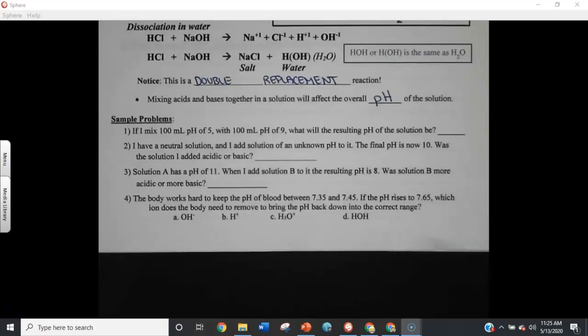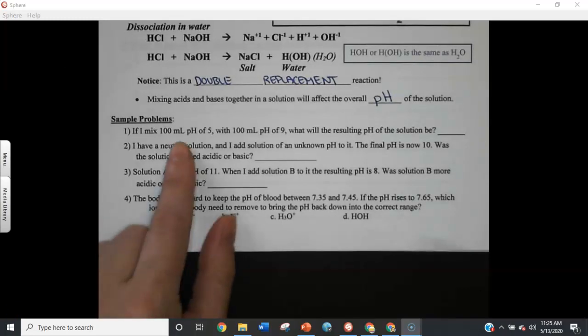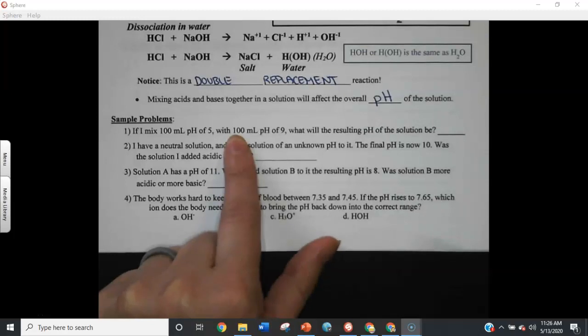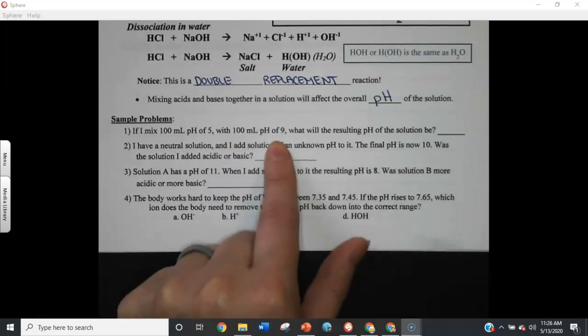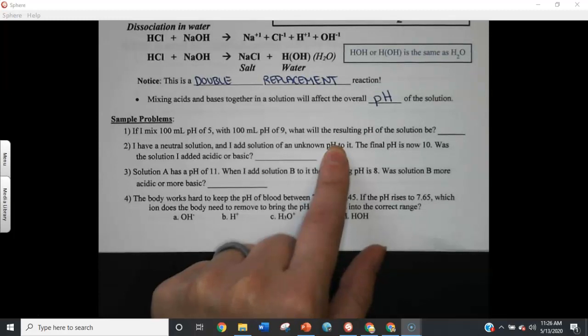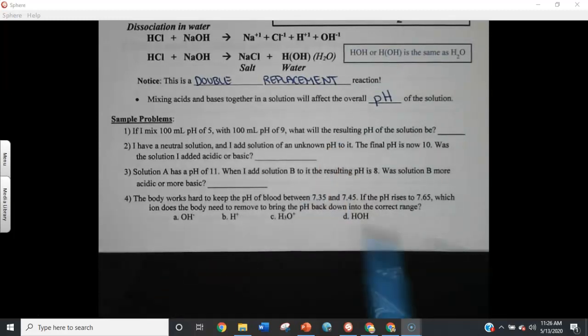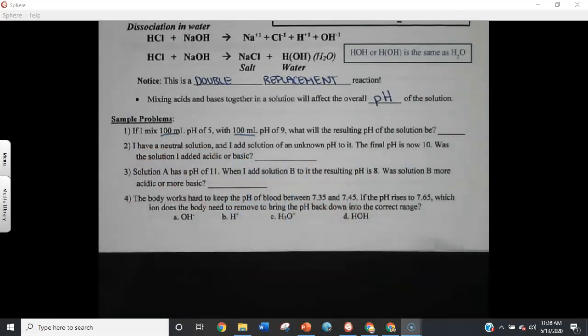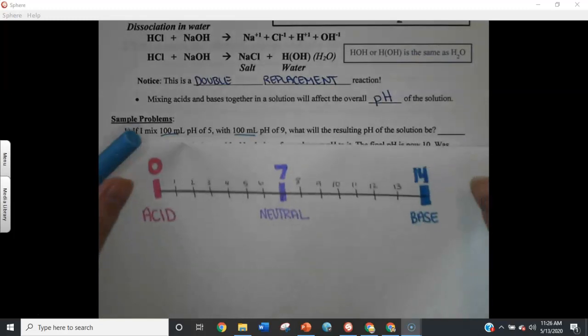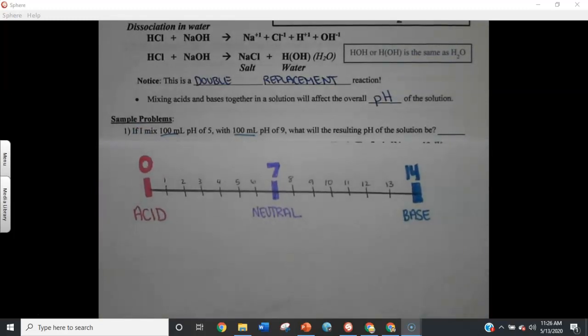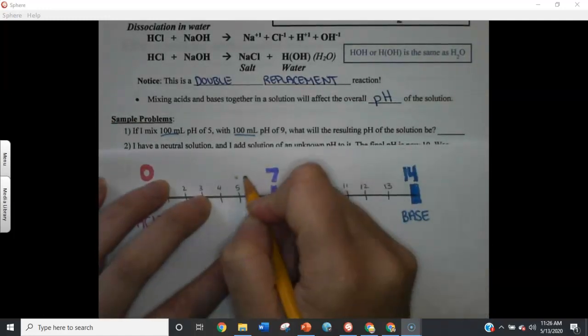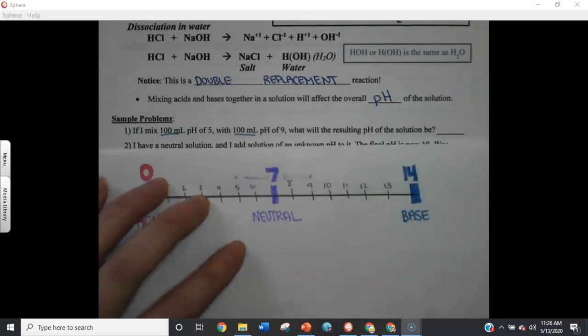So here are four sample problems. The first one says if I mix 100 milliliters of a pH 5 solution with 100 milliliters of a pH 9 solution, what's the resulting pH going to be? Now, what's important about this is that I'm mixing equal amounts. So if I mix in equal amounts of these two pHs, what's my combination going to be? So here, I sketched out a quick pH scale for us. So if I mix in equal amounts of a 5 and a 9, they are going to meet in the middle, which would be a pH of 7.